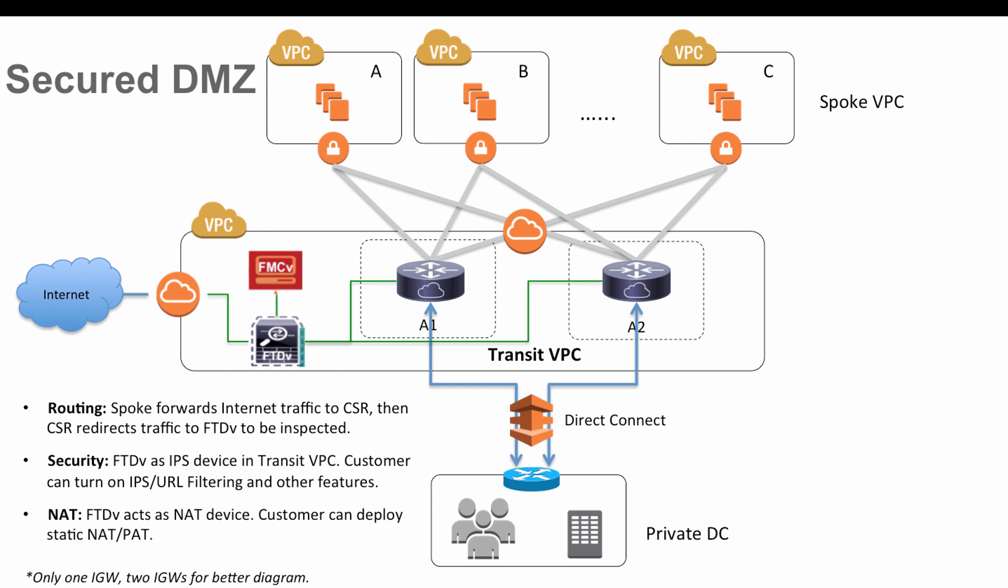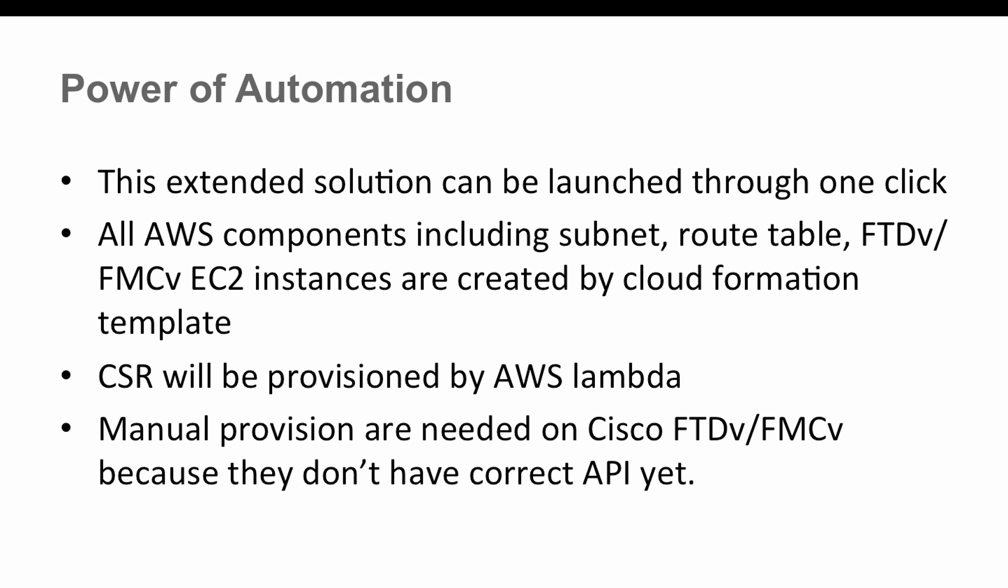In the previous demo I showed how to manually add routes, create subnets, set up Amazon-related components, configure the CSR, configure the FTD, configure FMC, and enable BGP — doing all the NATs manually. It's a long demo with a lot of work. The best thing is we can automate most of it. The automation covers Amazon components like subnets, route tables, and the FTD virtual and FMC virtual instances, which will be created by a new Cloud Formation template.